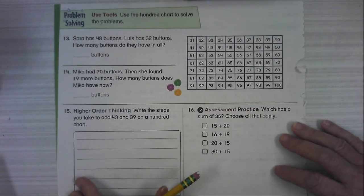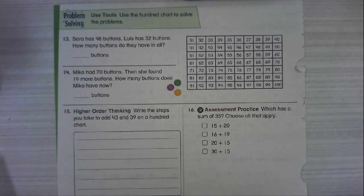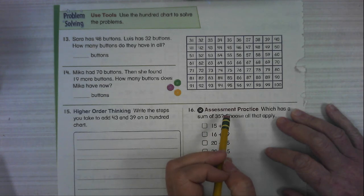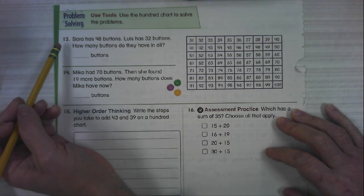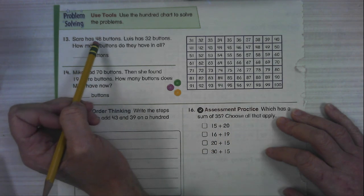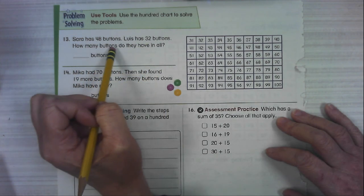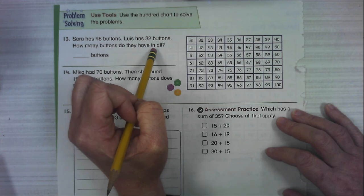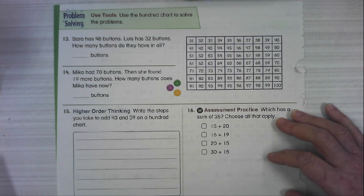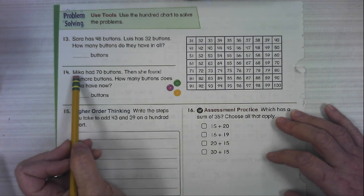Alright. I'm going to read these out loud. If you would like to work through the front before you listen to me read them, pause the video and just hit play whenever you're ready to hear the problems on the back. We're still using the 100 chart to solve our problems. Number 13, Sarah has 48 buttons. Luis has 32 buttons. How many buttons do they have in all? That's a combining problem.